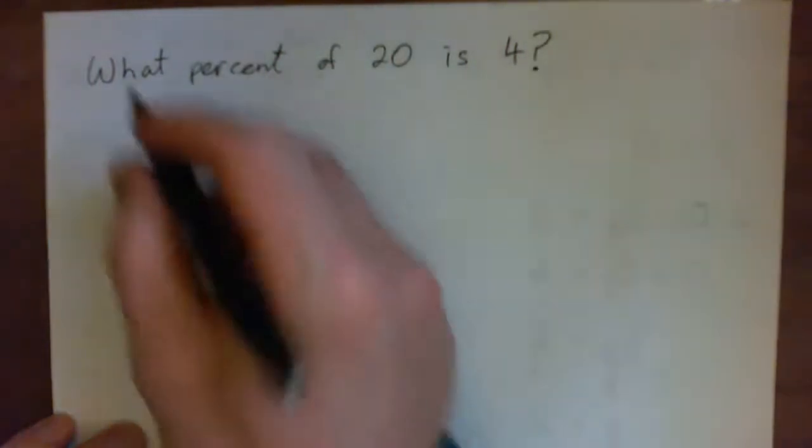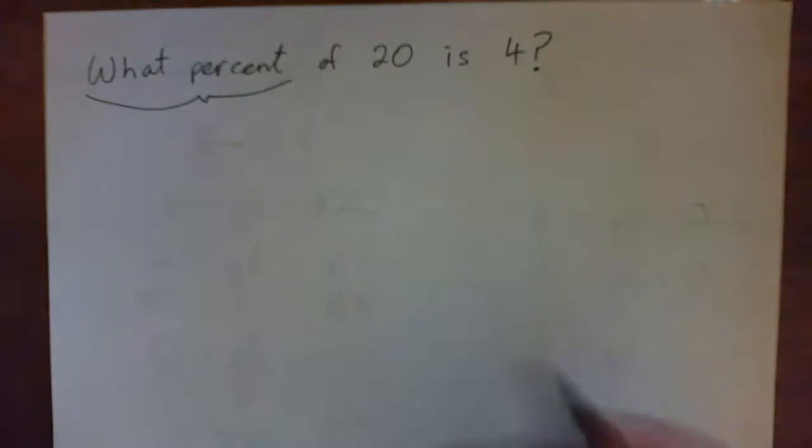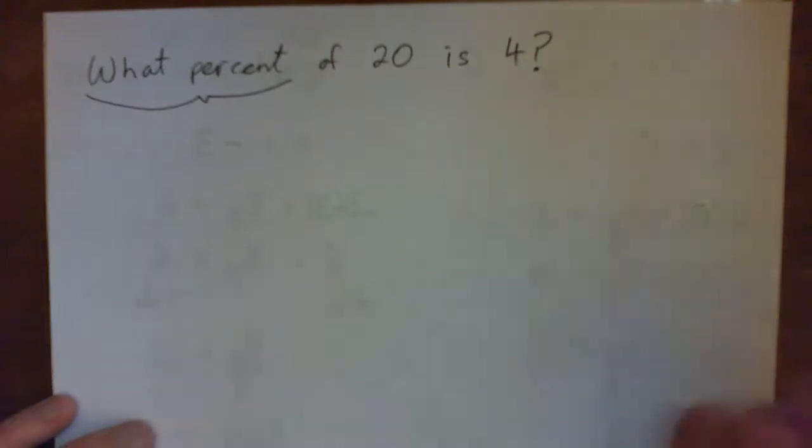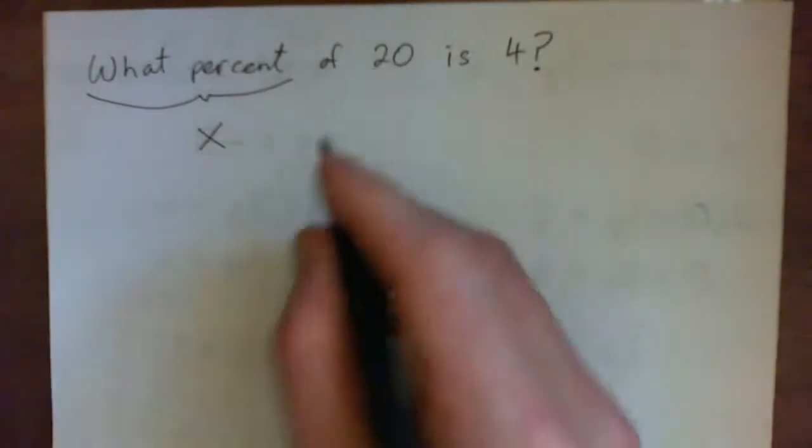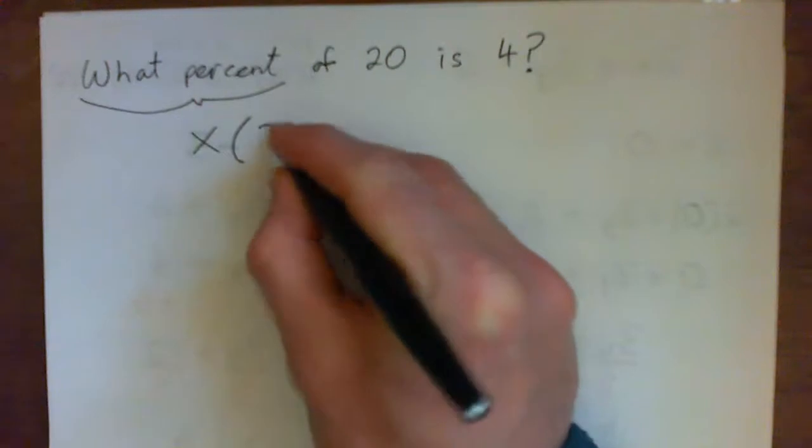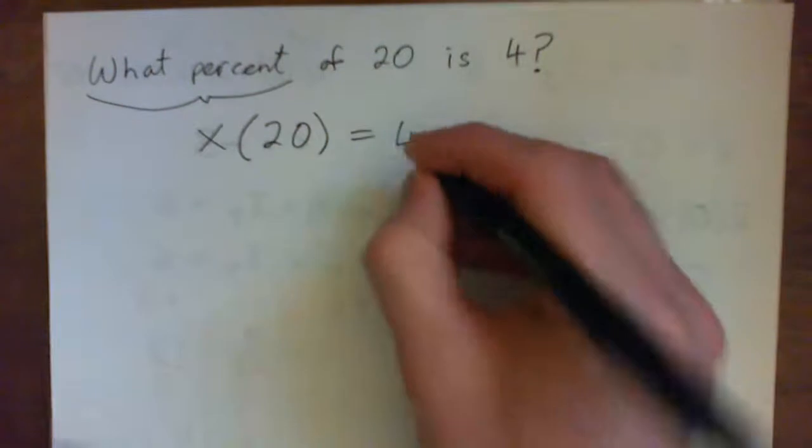What percent of 20 is 4? Let's take this what percent, which is our unknown, and we'll give it a letter, like A, B, C, or X. And it's some percent of 20. Now, in math, of means multiply. So times 20. X times 20. Is means equals. Is 4. So if X times 20 is 4, equals 4.